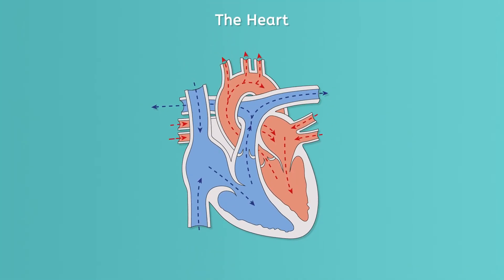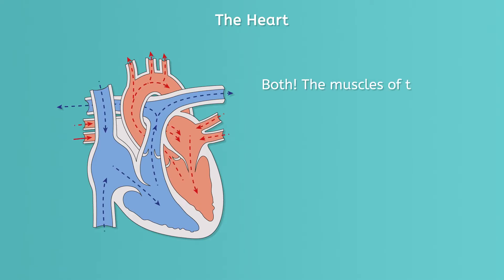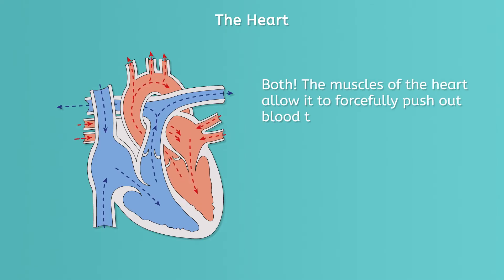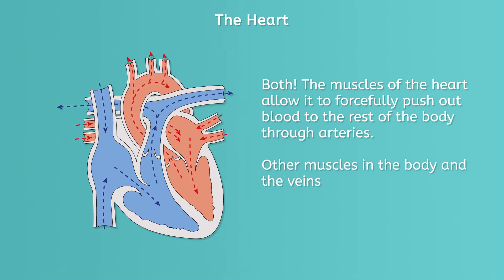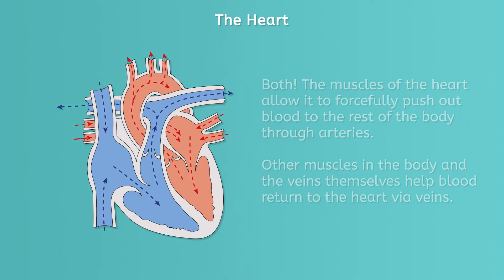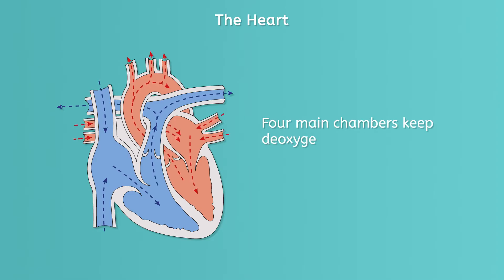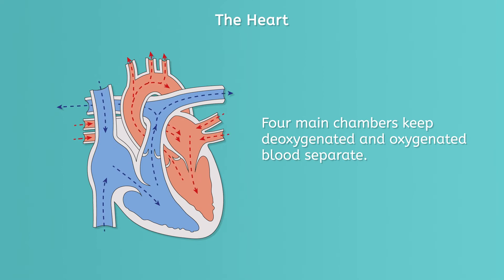All of this blood flow is made possible by the central organ of the circulatory system, the heart, which is about the size of your fist. Some people argue about whether the heart is an organ or a muscle — it's actually both. The muscles of the heart allow it to forcefully push out blood to the rest of the body through arteries. Other muscles in the body and veins themselves help blood return to the heart via veins. The heart is split into four main chambers, which keep deoxygenated and oxygenated blood separate, and allow the heart to move blood forward.